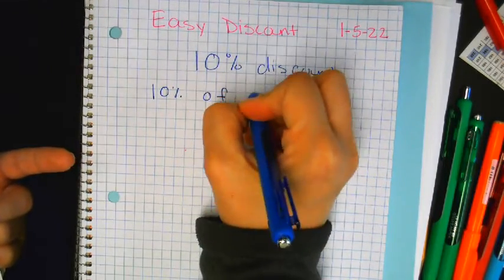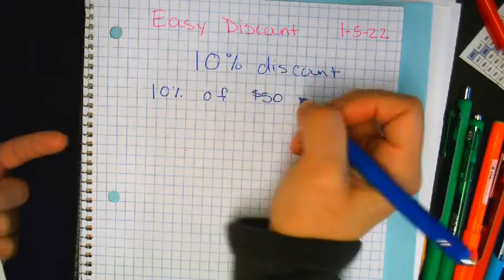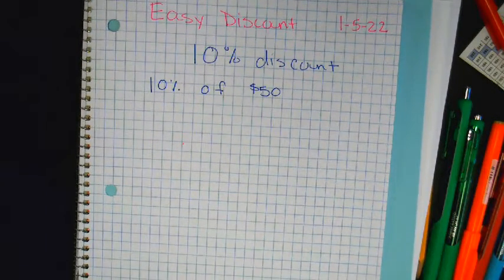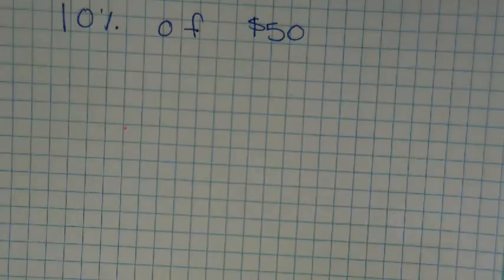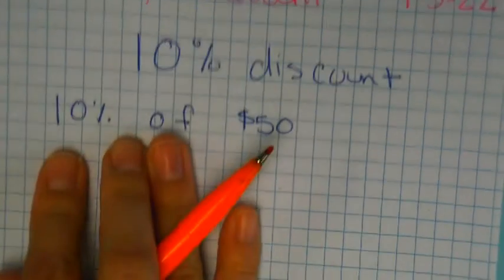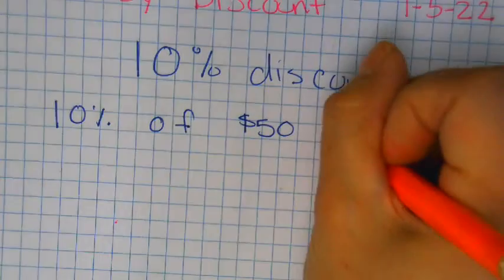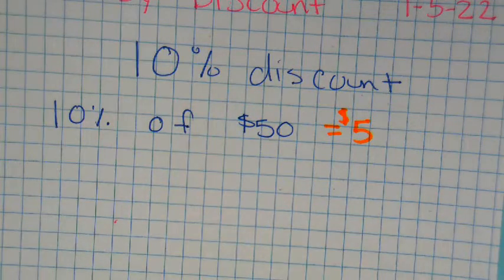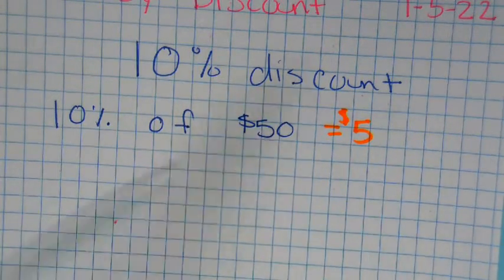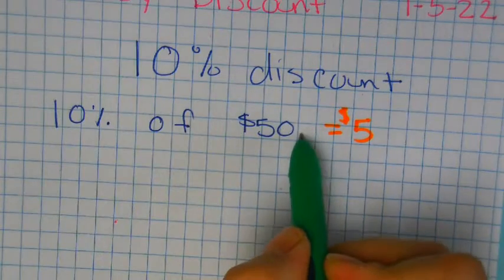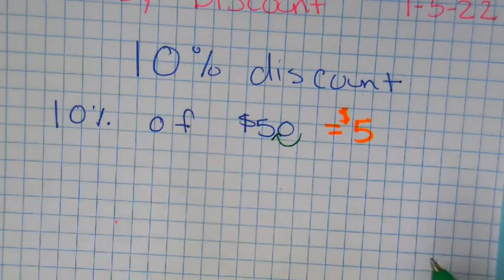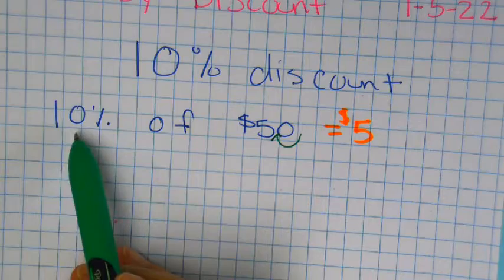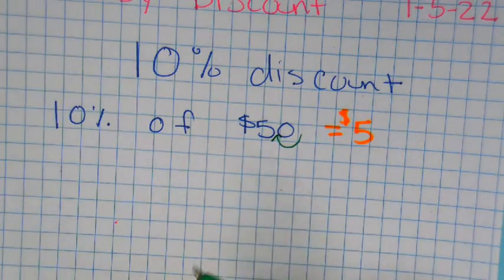It's not half — it's not 50%, it's 10%. 10% of 50 dollars is five dollars. All we do is we move the decimal one time, because it's 10% and 10% is like dividing by 10. So move the decimal one time.